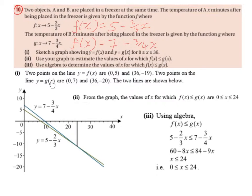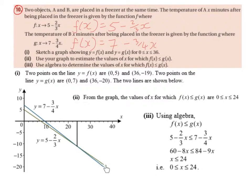Two points on the line y equals g of x: the first is (0, 7). Substituting 0 into g of x gives 7 minus 3 over 4 multiplied by 0, which equals 7. The second point is (36, -20). Substituting 36 gives 7 minus 3 over 4 multiplied by 36, which equals minus 20. We then join the points together. The green line represents f of x, which is 5 minus 2 over 3x, and the blue line represents g of x, which is 7 minus 3 over 4x.